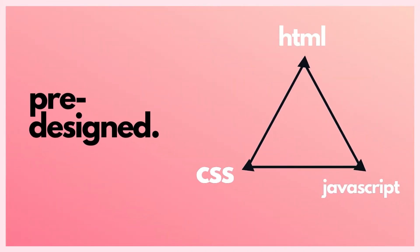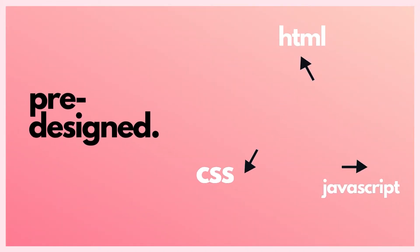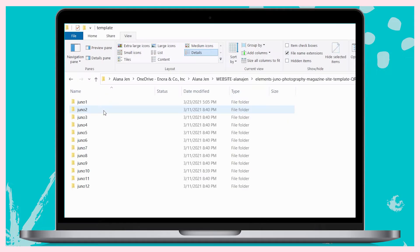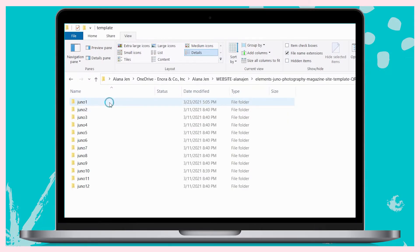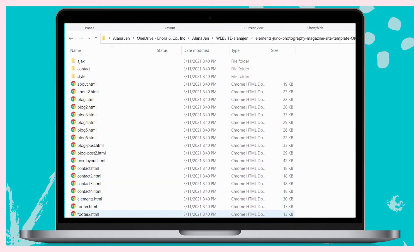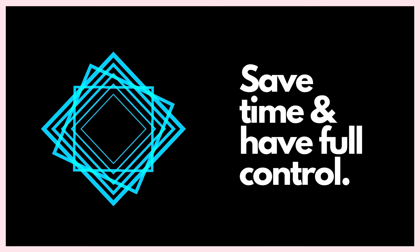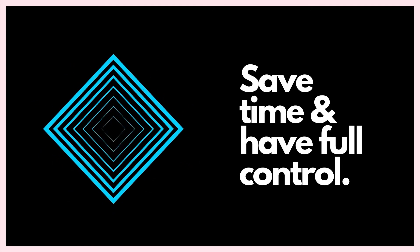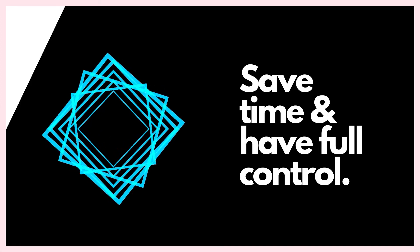A website template is a pre-designed website that includes the HTML, CSS, and JavaScript files. It'll often include multiple mockups of the home page, about page, content page, and other common pages found in websites. Their purpose is to help you save time by not having to create something from scratch, while still giving you full control over their contents — something you don't always have when you work with a builder.